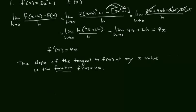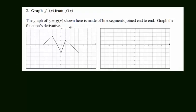The interpretation. The slope of the tangent to f of x at any x value is the function f prime of x equals 4x. In number 2, from the f prime of x, the first function here is g of x. And what we want to do here is graph another function. We're going to graph g prime of x. We're going to graph that special function that gives the slope of this g of x curve.